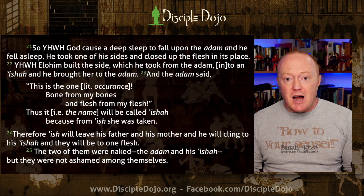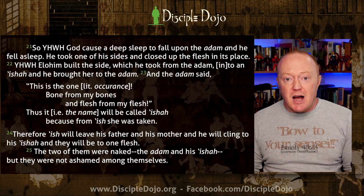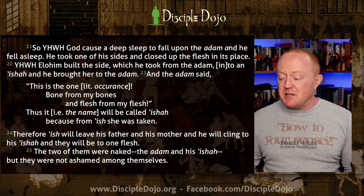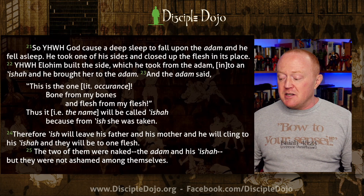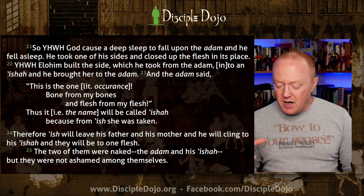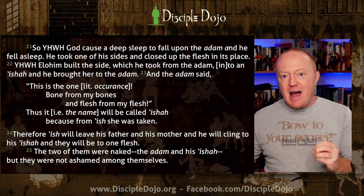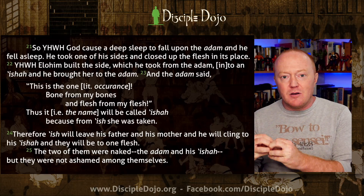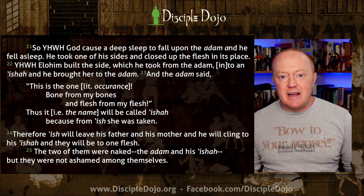The adam said, 'This is the one! — finally, this time — bone from my bones and flesh from my flesh. Thus it will be called isha, because from ish she was taken.' Ish is the word for man; since she was taken not from the adamah but from the ish's side, the man ish yields isha. Therefore ish will leave his father and his mother and cling to his isha, and they will become one flesh — just as the flesh was taken and closed up, when isha and ish are reunited there's a coming together of what was separated.